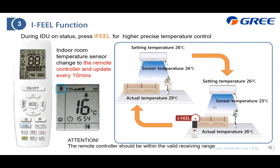I will introduce the different functions of the wireless remote controller. First is the iFill function. The purpose of this function is to use the detected value from the temperature sensor inside the remote control and send this information to the air conditioner. This allows higher sensitivity detection of the room temperature more accurately for the customer, since the remote control is close to the user.